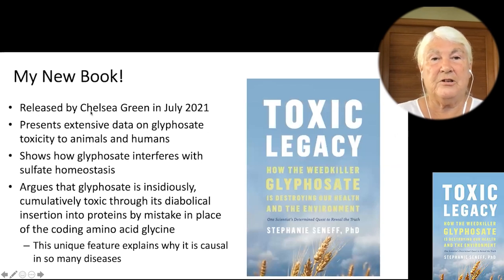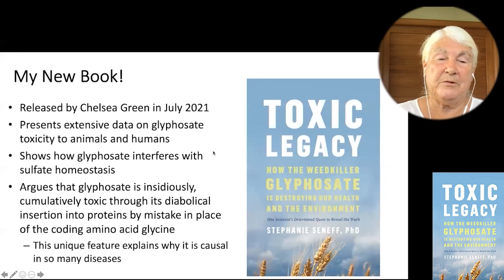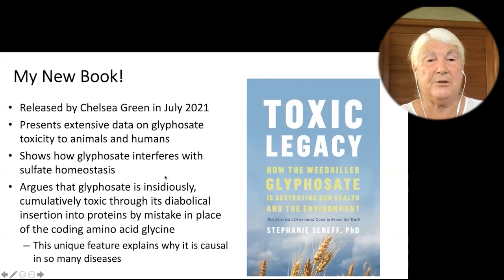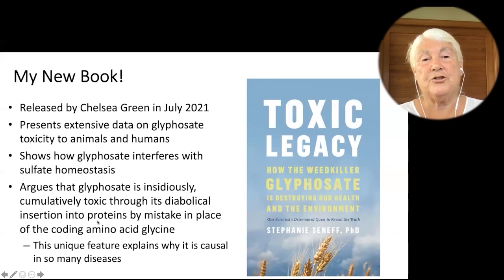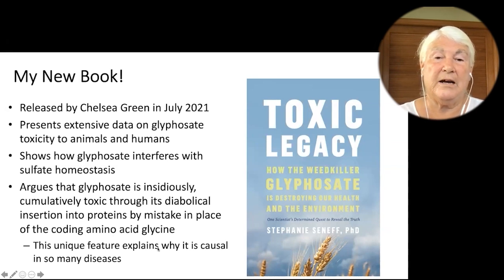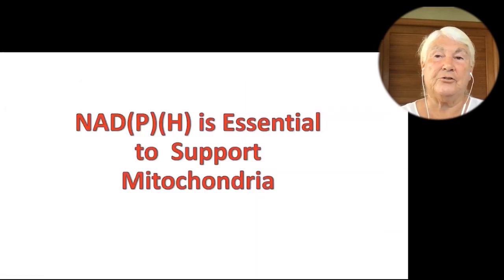Here's my new book, released by Chelsea Green in July 2021. I present extensive data on glyphosate's toxicity to animals and humans from the research literature, and I show how glyphosate disrupts sulfate homeostasis, which is the link to autism and to many other diseases. I argue that glyphosate is insidiously cumulatively toxic through its diabolical insertion into proteins by mistake in place of the coding amino acid glycine. This explains why it has a very unusual toxic effect on the body, causing all kinds of different diseases.